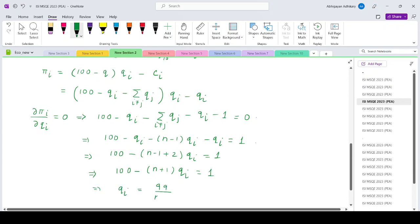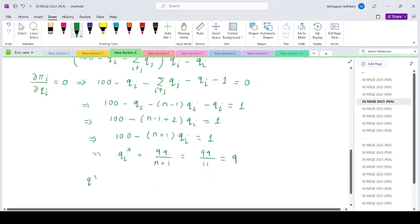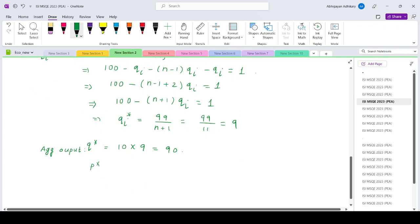What is qi? It is 99 divided by n plus 1. So n is 10, so divide by 11, so it is 9. Each firm will produce 9 units of output. What is the aggregate output? Q star equals 10 into 9, which is 90. What is the price charged in the market? It is basically 100 minus q star, which is 100 minus 90, which equals 10.